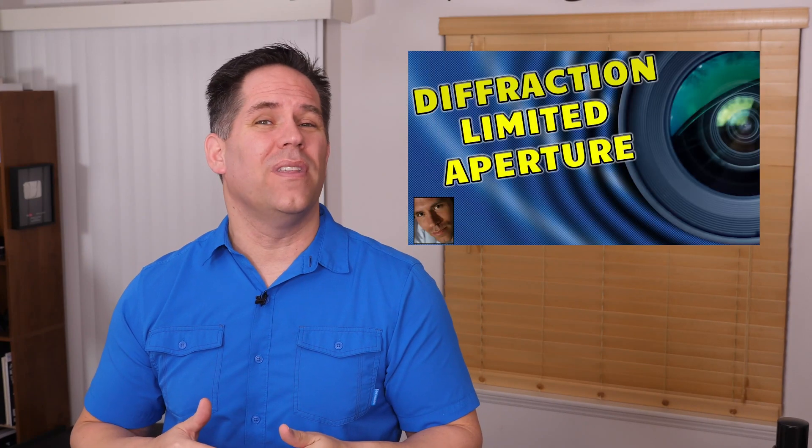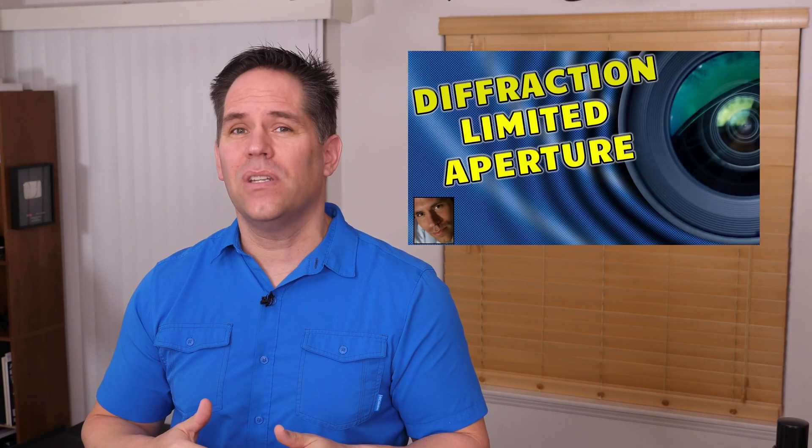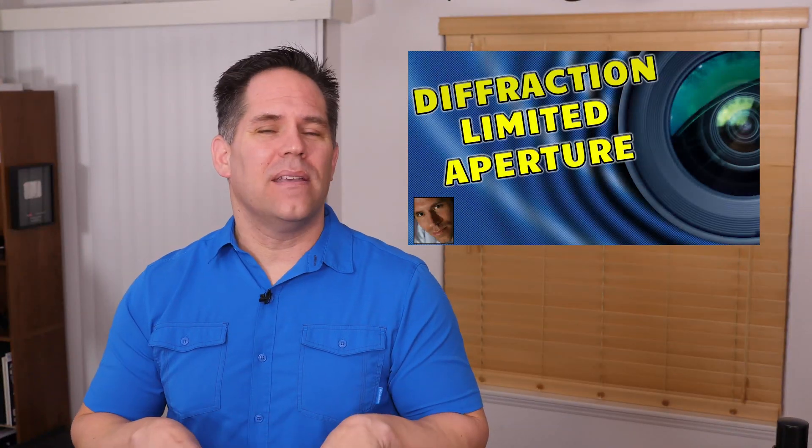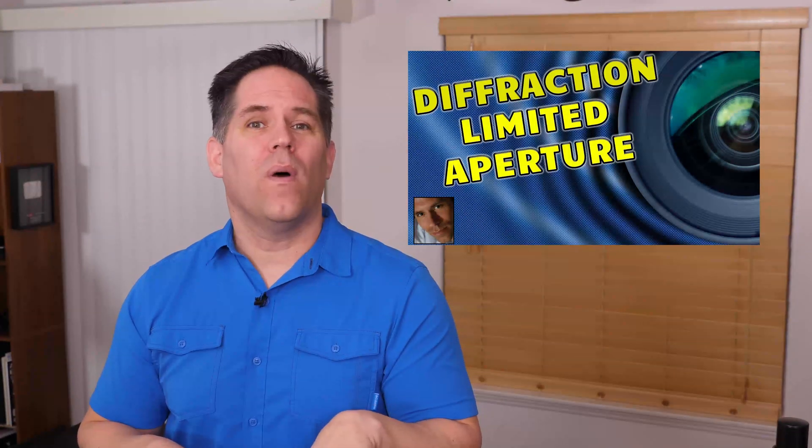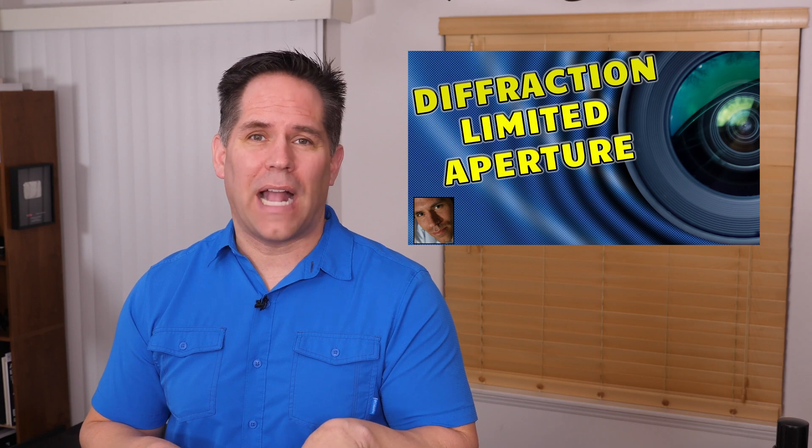Camera manufacturers have actually started to list something called the DLA, which is the diffraction limited aperture. That is the f-stop at which point the shooter can expect diffraction to happen. When we see it on the Canon 90D, it's f5.2.